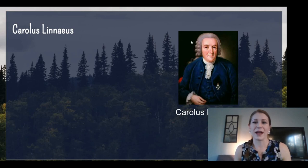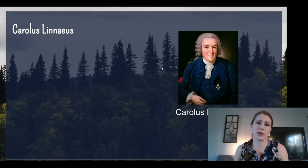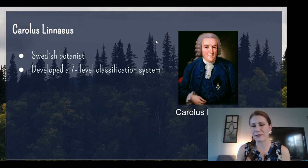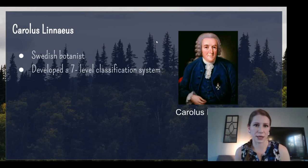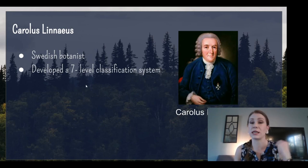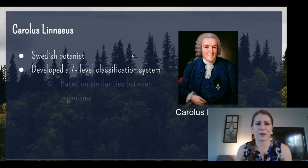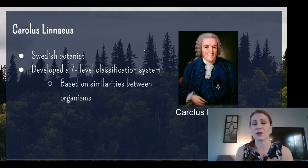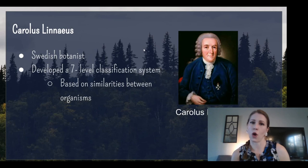Going back in time — this is a picture of Carolus Linnaeus. He was one of the first people to create a system for this naming. He was a Swedish botanist, and he designated a seven-level classification system. Those levels are called taxa or taxons — another word for level. His levels were based on similarities between organisms, even if it was just things that fly, things that crawl, or things that swim — whatever was easily observed at the time.